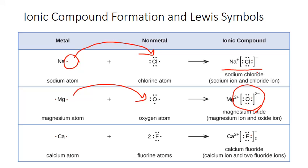You can also write Lewis symbols for ionic compounds that contain three or more ions. We use subscripts to indicate multiple amounts of either cations or anions. For example, calcium has two valence electrons and fluorine has seven and only needs one. So when calcium reacts with fluorine, it loses a valence electron to two different fluorine atoms. The result is calcium fluoride, which contains one calcium ion with a plus two charge and two fluoride ions each with a negative one charge. The two is written as a subscript outside the brackets for the fluorine ions, and we use those brackets to show that all the valence electrons are on the fluoride ions, not on the calcium.